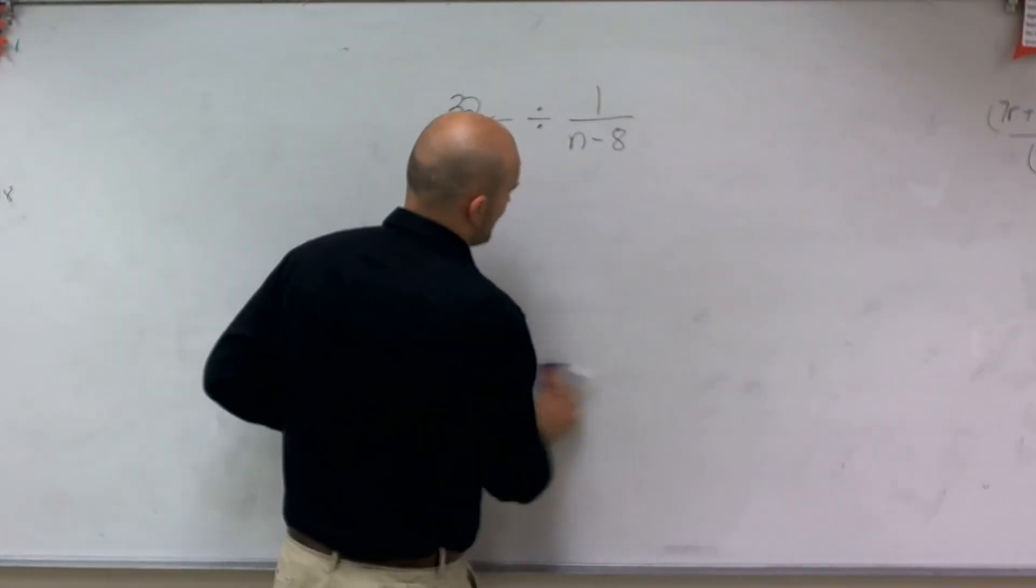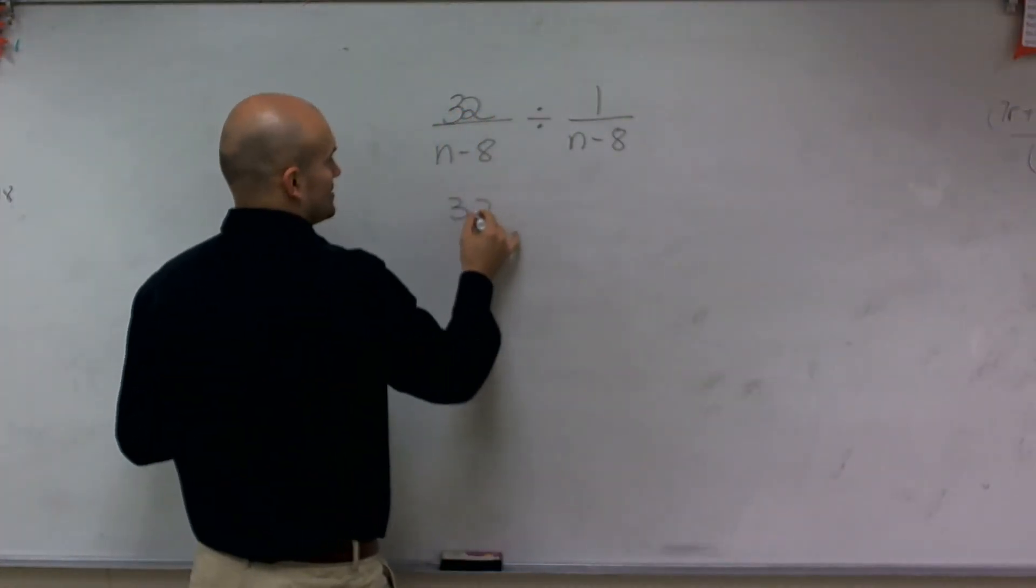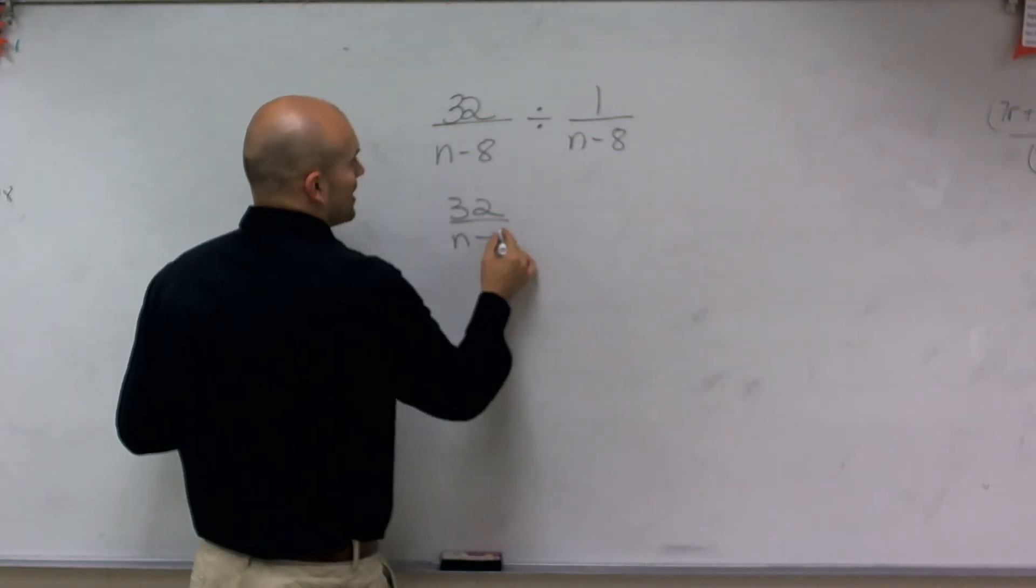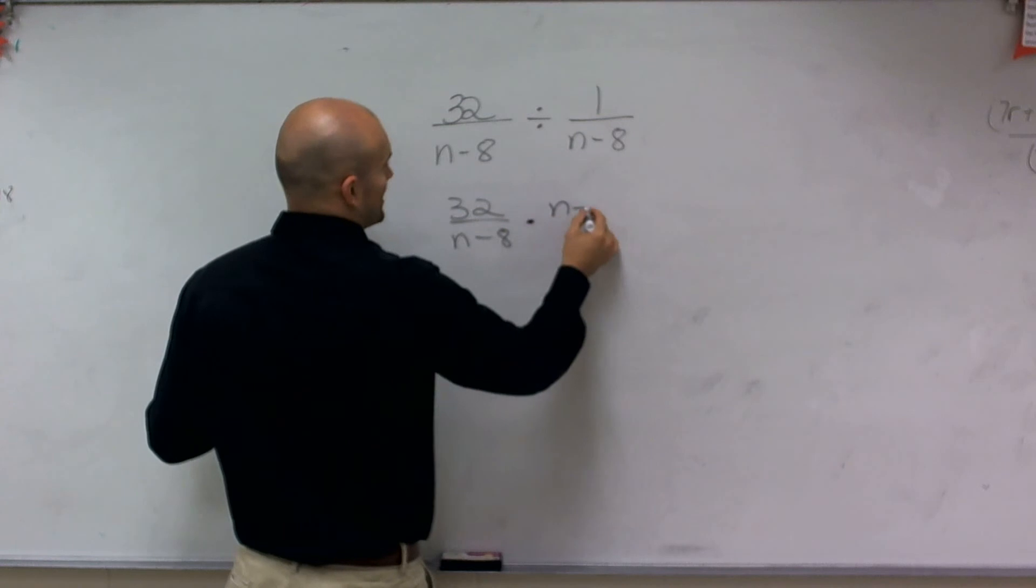So for this problem, what I'm going to do is I'm going to reciprocate my divisor and multiply it across.